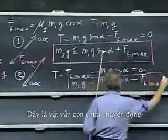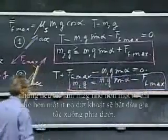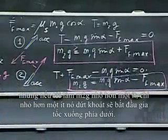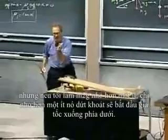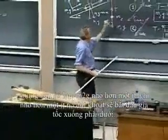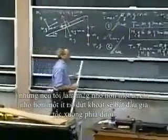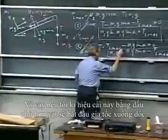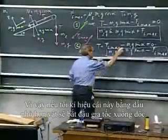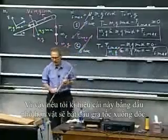This is when the object is still not moving, but if I make M2G a hair less, just a teeny little less, it will definitely start to accelerate downwards. So if I make this smaller than sign, the object will start accelerating downhill.